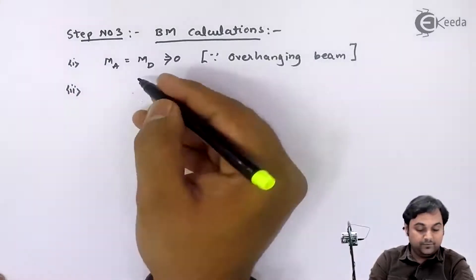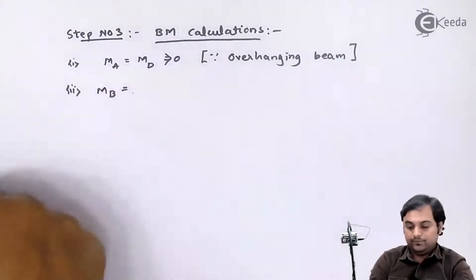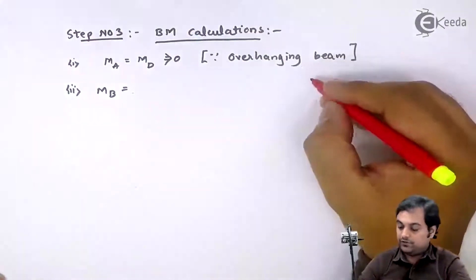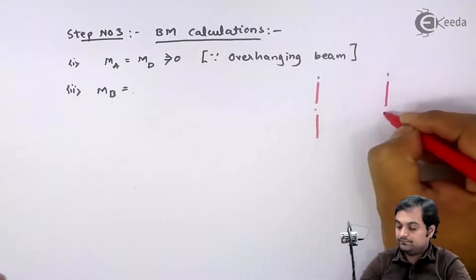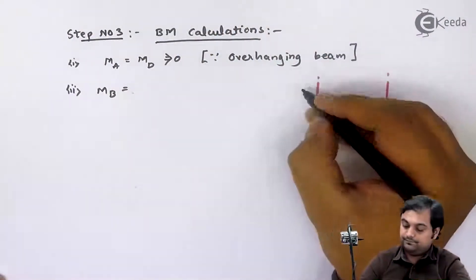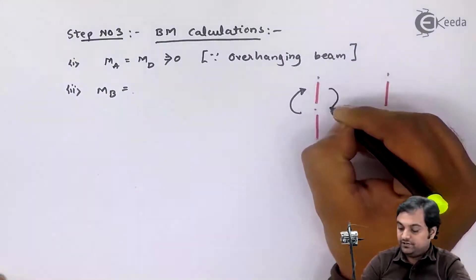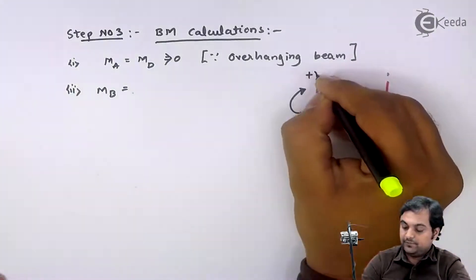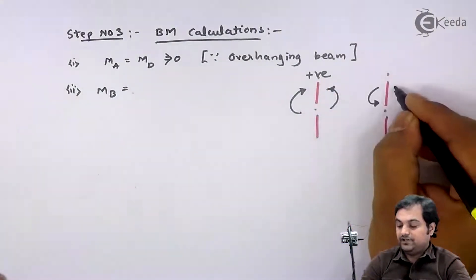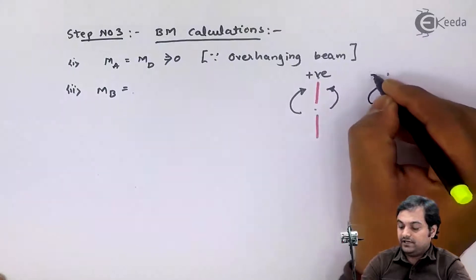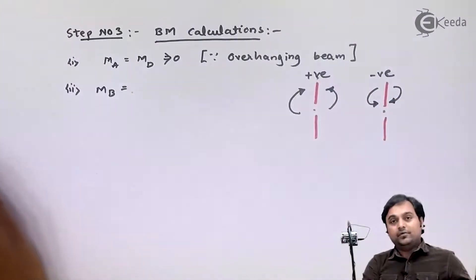Next, bending moment at point B. First of all, draw the convention. Clockwise moment to left and anti-clockwise moment to the right are positive. Anti-clockwise moment to left and clockwise moment to right are negative. So here if I am calculating moment at B.